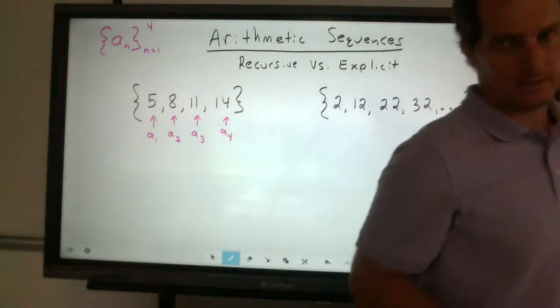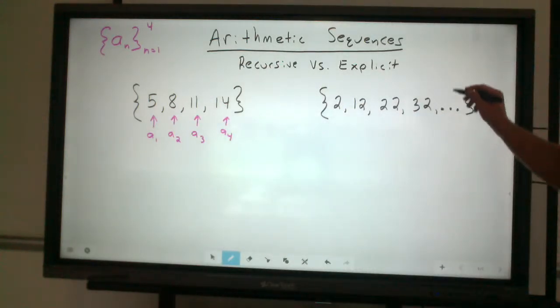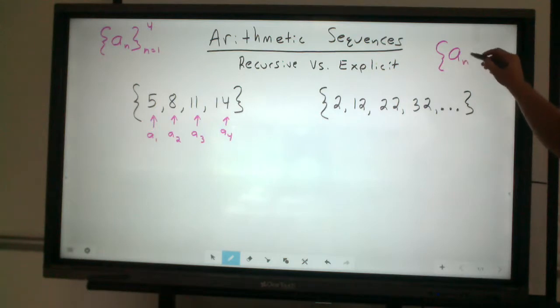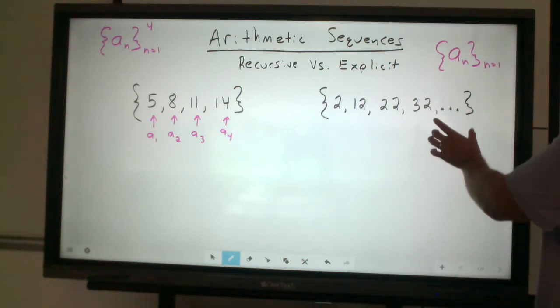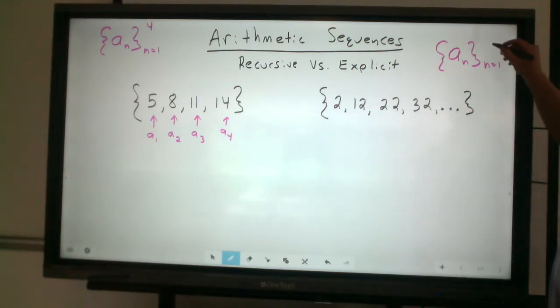For our infinite sequence, we write the same notation where any term is going to be between our first term, which in this case happens to be 2, all the way to what happens to be infinite. So we can write infinity.